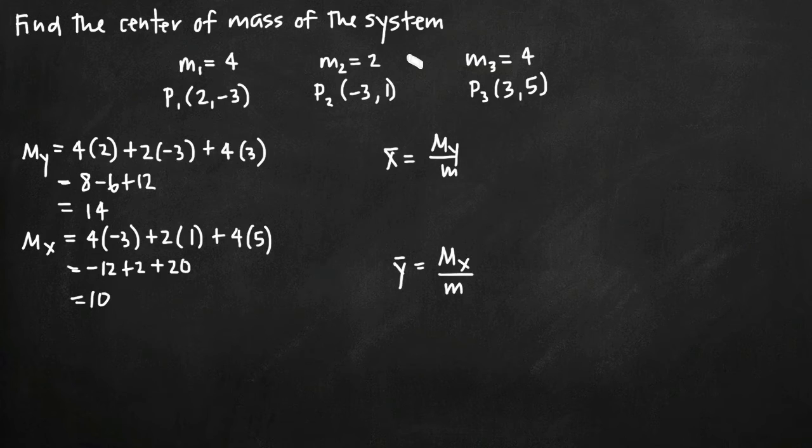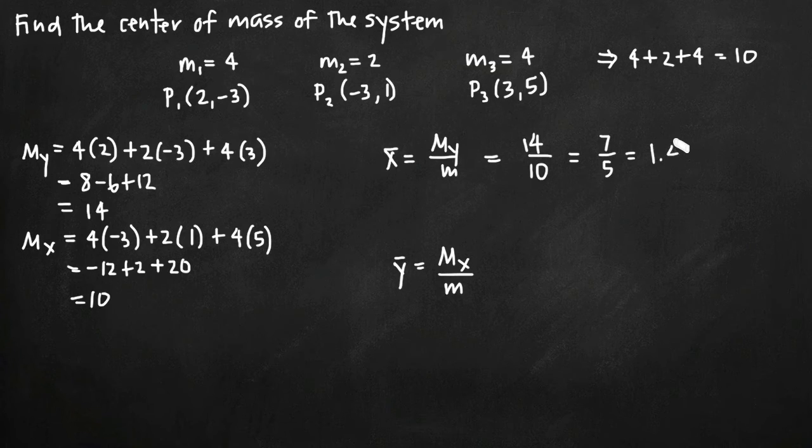So we already know m_y is 14. Total mass, m, is the sum of our three masses. So when we add our three masses together, 4 plus 2 plus 4, we get 10. So 10 is the total mass of the system. So we're just going to take 14, m_y, and we're going to divide it by total mass, which is 10. And that's going to simplify to 7/5, which is the same thing as 1.4.